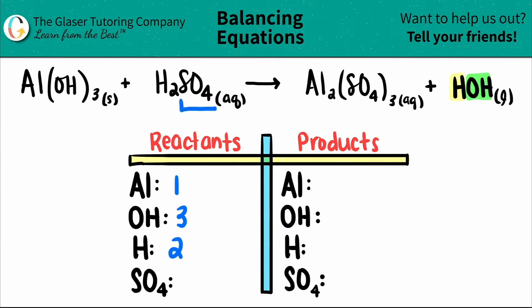And the polyatomic sulfate, which is SO4, the four is included in the polyatomic, so I don't see any parentheses, right? So that means that I just have one sulfate.